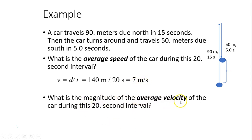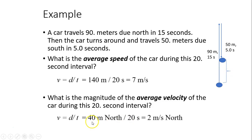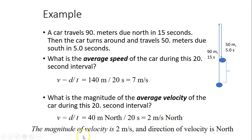What is the magnitude of average velocity during this 20-second interval? Average velocity is total displacement over time. The total displacement is 40 meters north, so average velocity is 40 meters divided by 20 seconds = 2 meters per second north. The magnitude of velocity is 2 meters per second, and the direction is north.